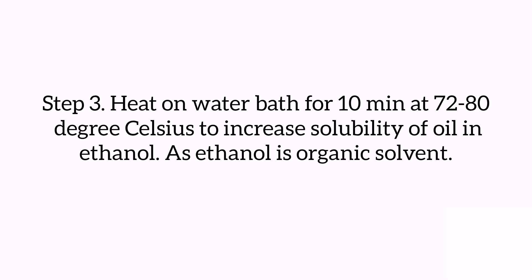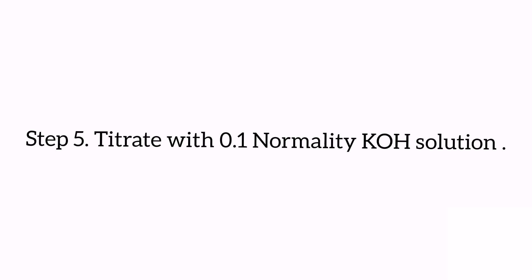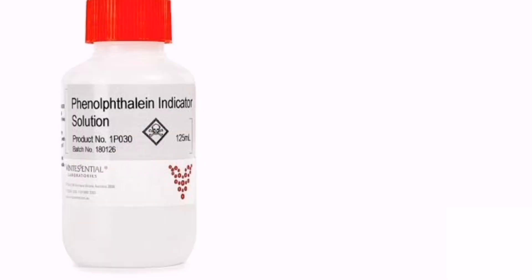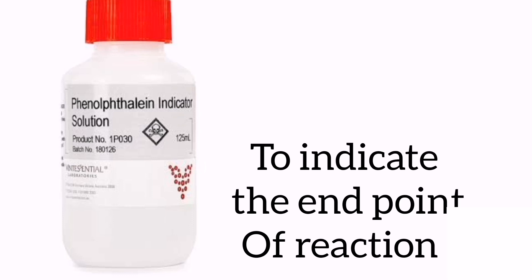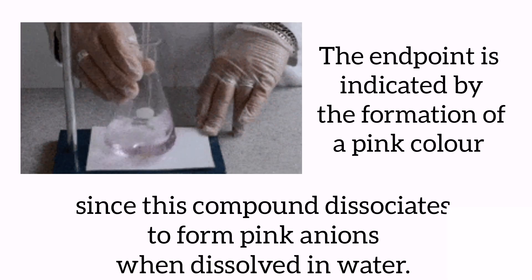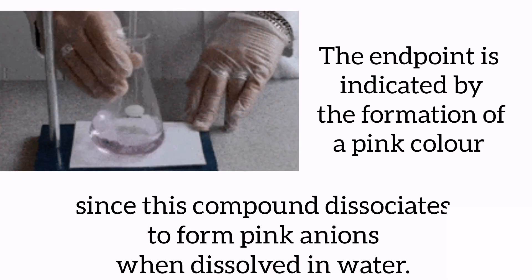Moving to step four: after heating, cool it down and add two to three drops of phenolphthalein indicator. Step five: titrate with 0.1 normality potassium hydroxide solution. Phenolphthalein is a colorless weak acid that is widely used as an indicator in titration experiments to indicate the endpoint of the titration. The endpoint is indicated by the formation of a pink color, since this compound dissociates to form pink anions when dissolved in water.